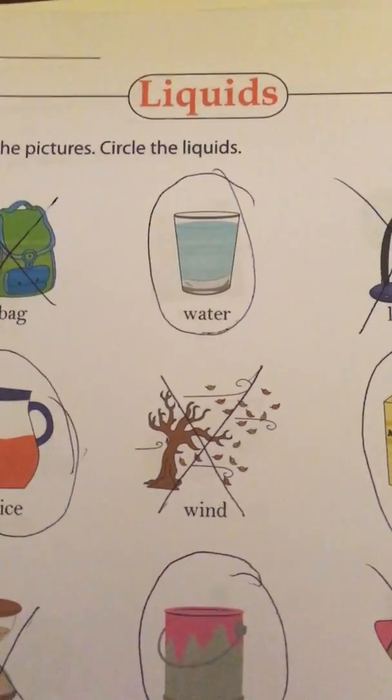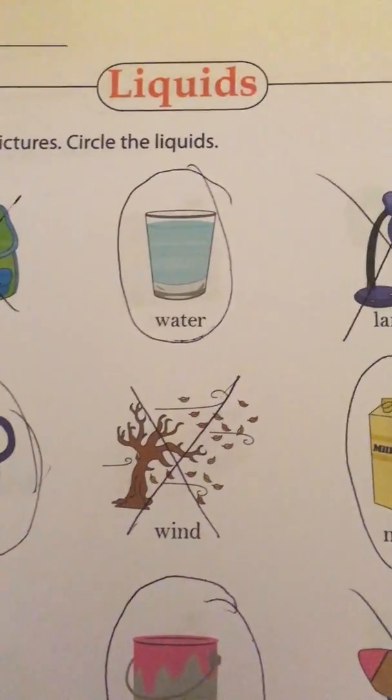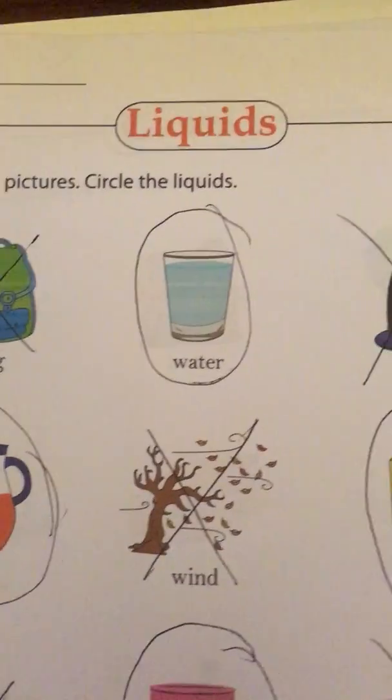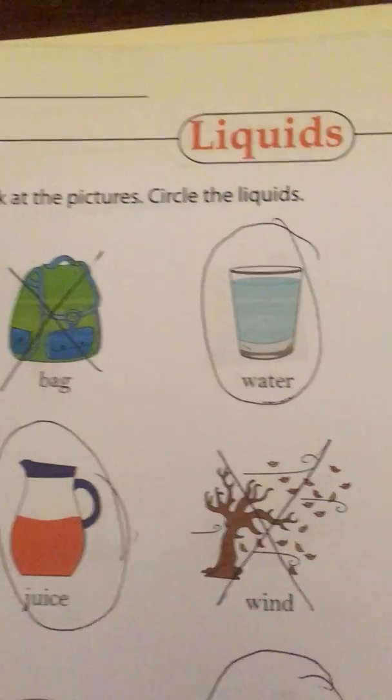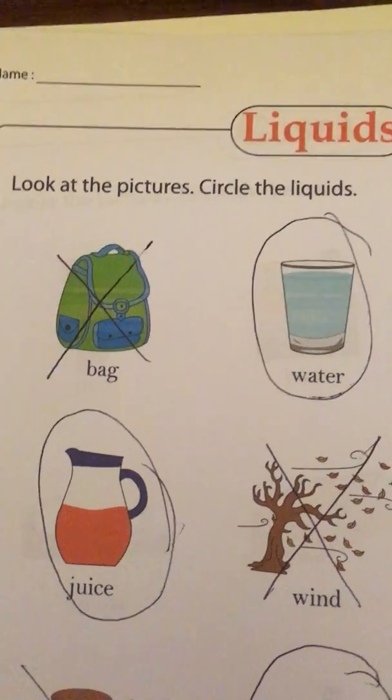We're going to talk about states of matter, and the first one we're going to talk about is liquids. So we're going to put an X on the things that are not liquids, and we're going to circle the things that are.